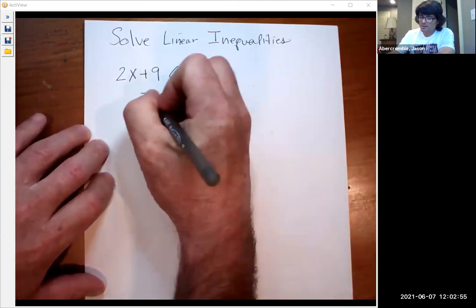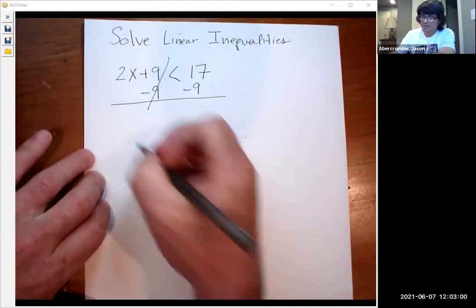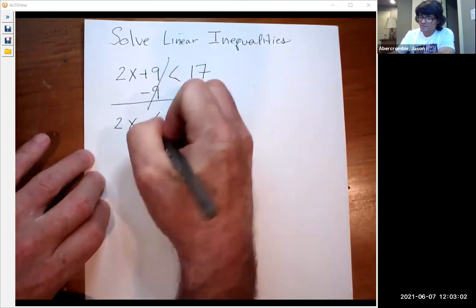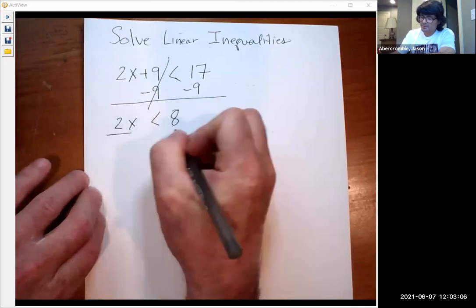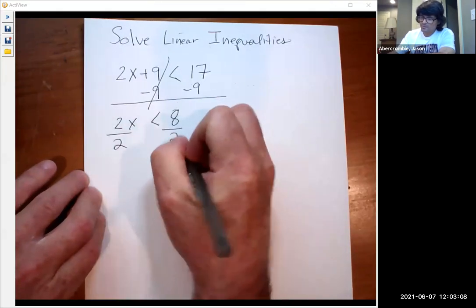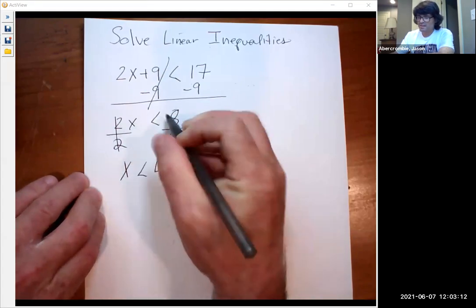So we're going to start out by taking away 9 from both sides. This just works like any sort of equation that you would have that you need to solve. 17 minus 9 is 8. And then we're going to divide by 2 here to get the x by itself. And notice that I leave the sign the same.